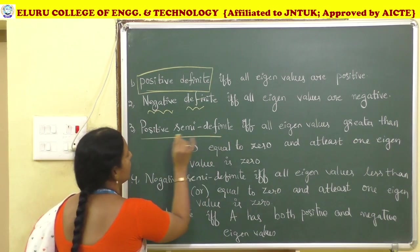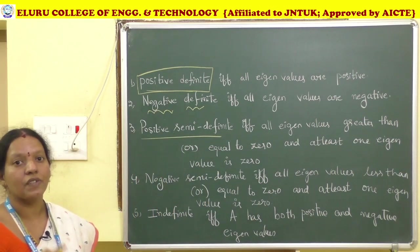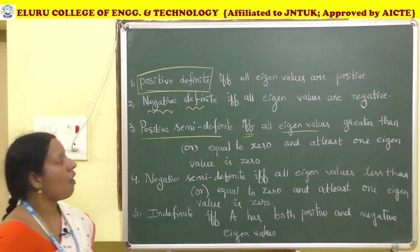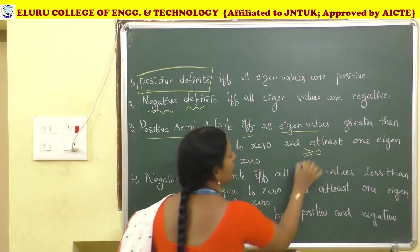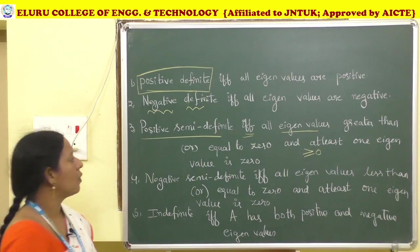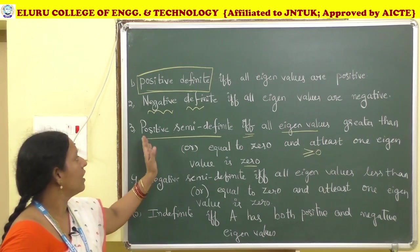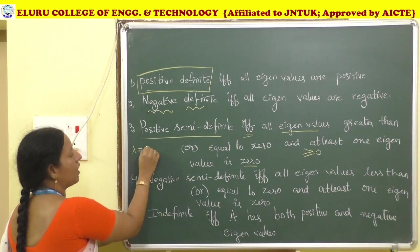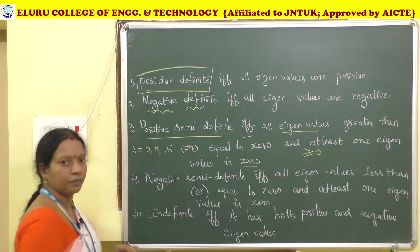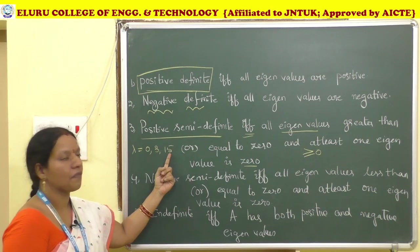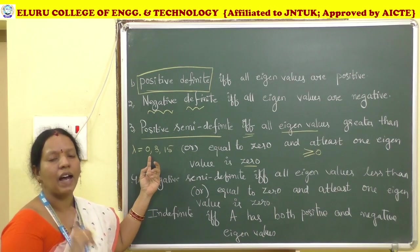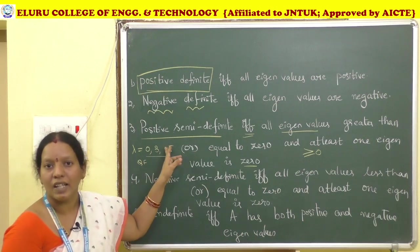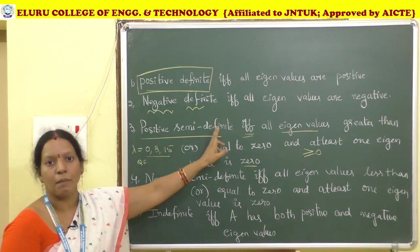Positive Semi-definite: if and only if all eigenvalues are greater than or equal to zero and at least one eigenvalue must be zero, then the given quadratic form is positive semi-definite.